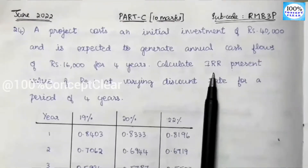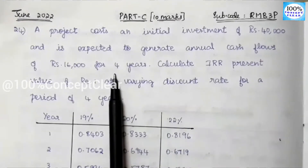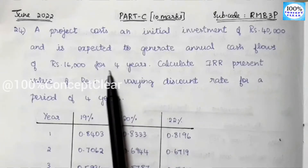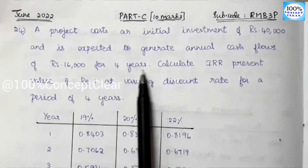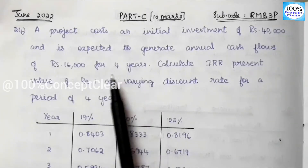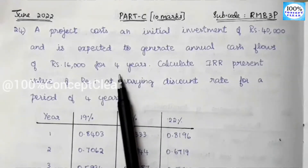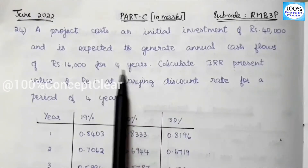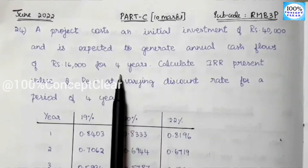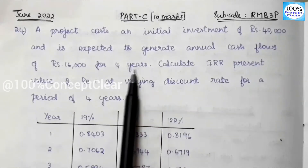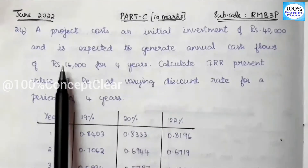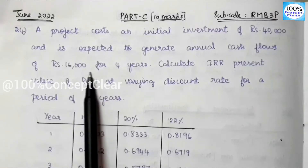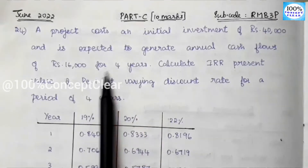There are two types in the IRR method. One is when cash inflows are uniform and one is when cash inflows are not uniform. In this problem, cash inflows are uniform in each year — the same Rs.16,000 cash inflow for 4 years.